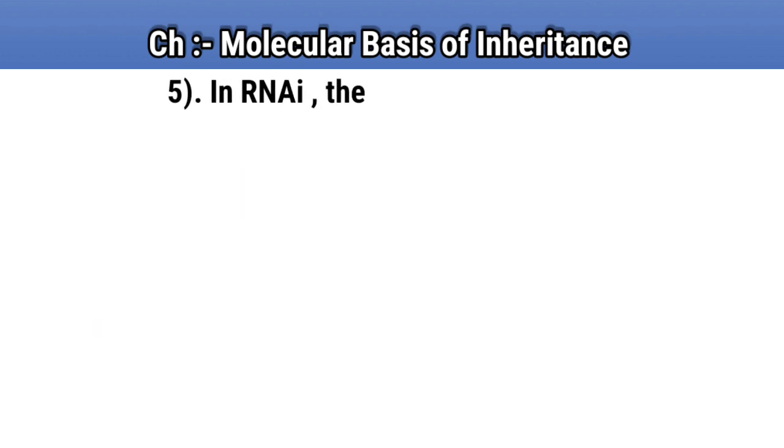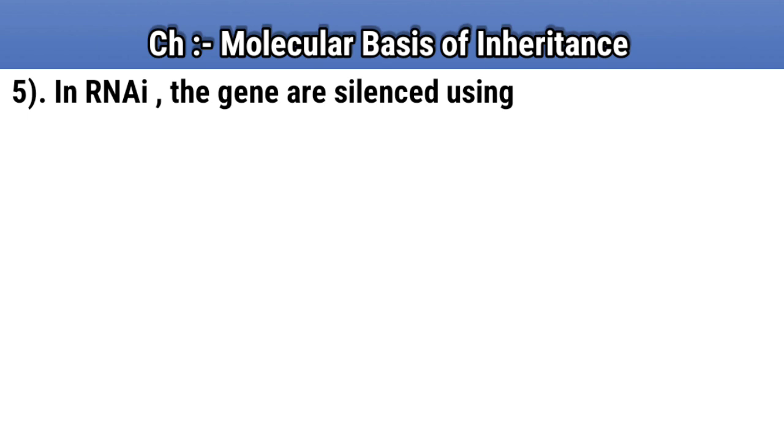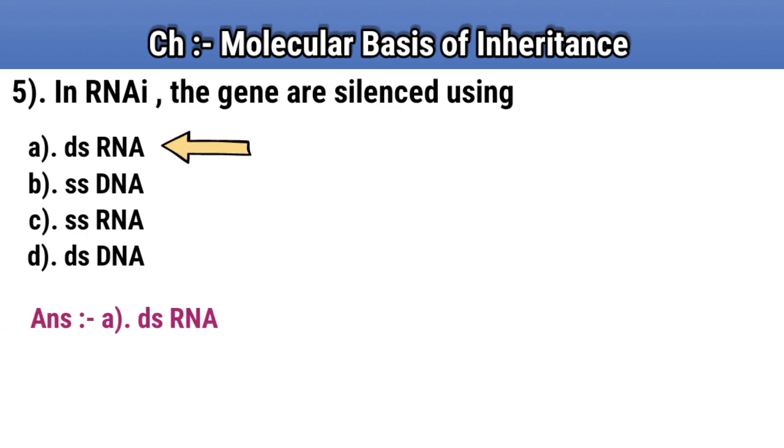Question number 5. In RNAi the genes are silenced using. Option A: dsRNA. Option B: ssRNA. Option C: ssRNA. Option D: dsDNA. Answer A: dsRNA.